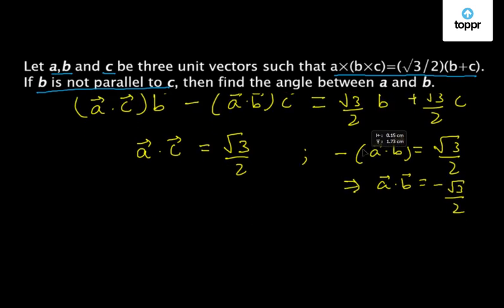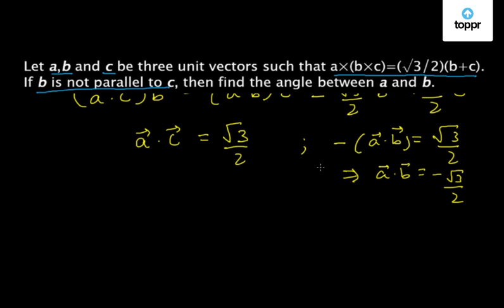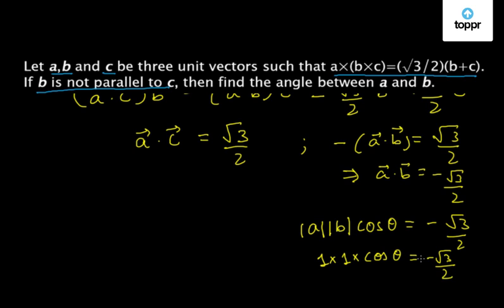Now, we have been asked in the question to find out the angle between A and B. So, we can write A dot B as mod of A into mod of B cos theta is equal to minus root 3 by 2. Now, the magnitude of A and B will be equal to 1 because A, B and C all are unit vectors. So, 1 into 1 into cos theta is equal to minus root 3 upon 2.